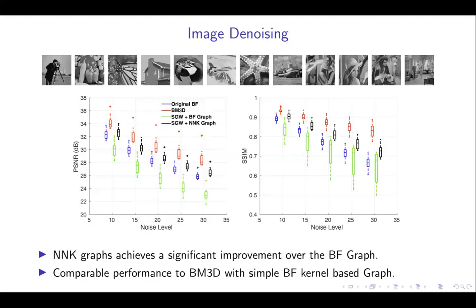Next, we consider the problem of image denoising to evaluate filtering performance. We compare the performance of our method in conjunction with spectral graph wavelet to that of the bilateral filter graph and the original bilateral filtering method. We also compare our method to the BM3D method. The average performance over 12 images at five different Gaussian noise levels as shown in the plot. As can be seen, in terms of both PSNR and SSIM, the proposed NNK graph based on simple bilateral filter kernel improves performance significantly.